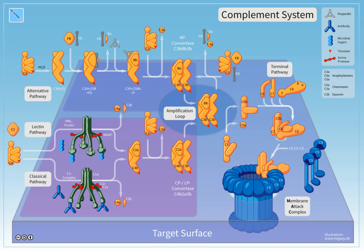The end result of this complement activation or complement fixation cascade is stimulation of phagocytes to clear foreign and damaged material, inflammation to attract additional phagocytes, and activation of the cell-killing membrane attack complex. Over 30 proteins and protein fragments make up the complement system, including serum proteins and cell-membrane receptors. They account for about 10% of the globulin fraction of blood serum.